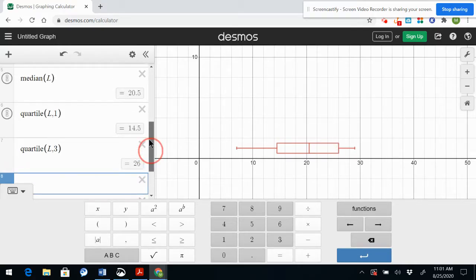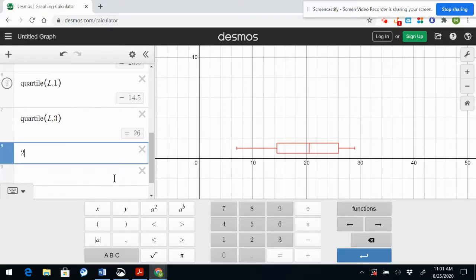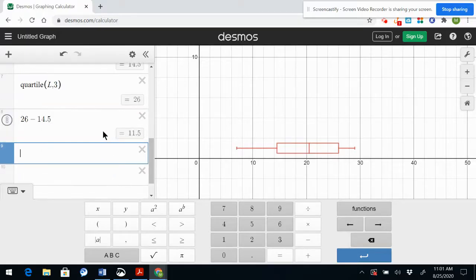In order to get my interquartile range all I need to do is subtract Q3 and Q1 or the width of this box. So I can also do that on Desmos and I simply take 26 minus 14.5 and I get my interquartile range.